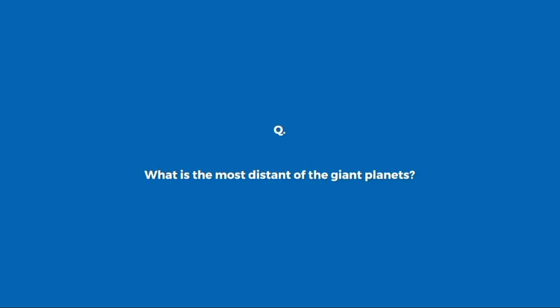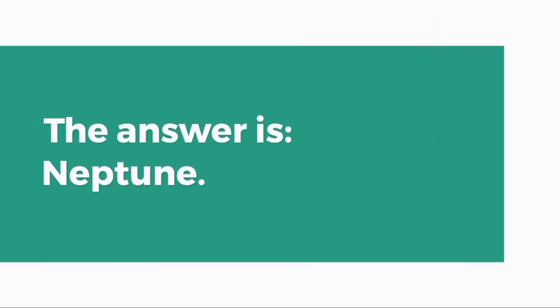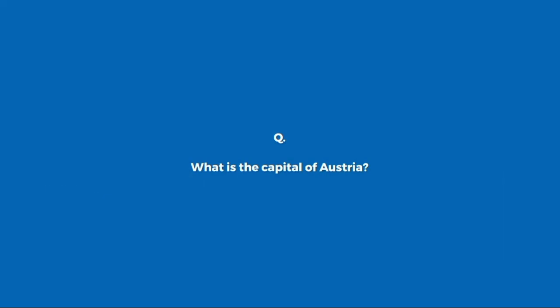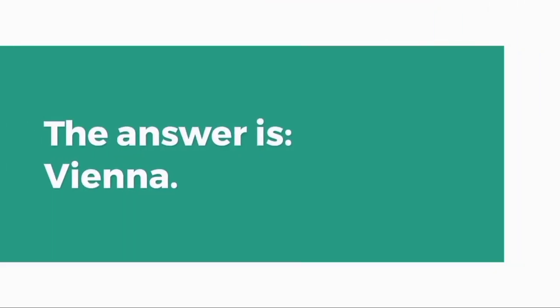What is the most distant of the giant planets? Neptune. What is the capital of Austria? Vienna.